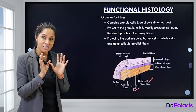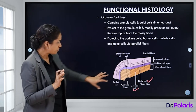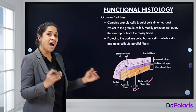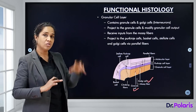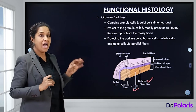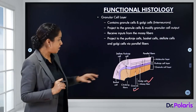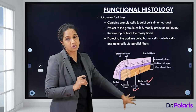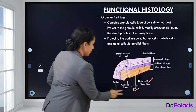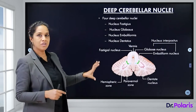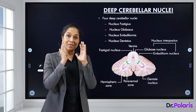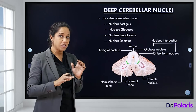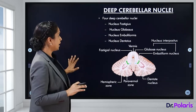All the cells of the different cerebellar layers are connected with each other through axons and dendrites, and it is only the Purkinje cell which connects the cerebellar cortex to the deep cerebellar nuclei.